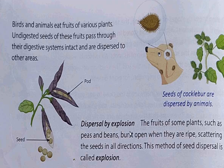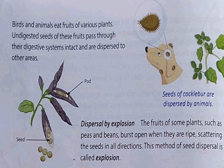Our next type is dispersal by explosion. The fruits of some plants such as beans burst open when they are ripe, scattering the seeds in all directions. This method of dispersal is called explosion. When the seeds fall on the ground from that pod, you can see the same plant growing over there. This is called explosion.